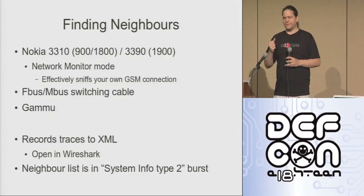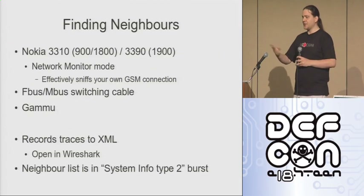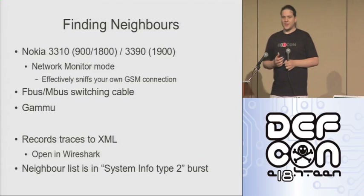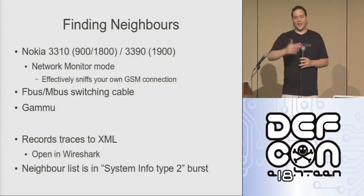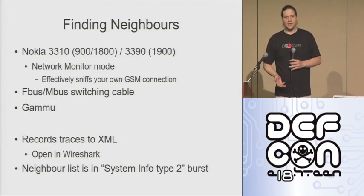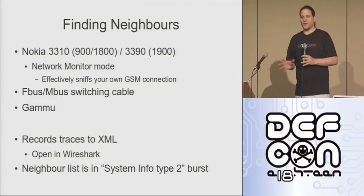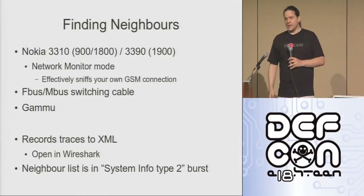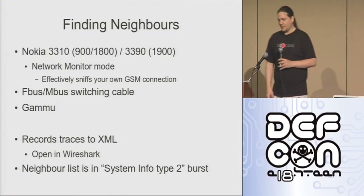You get a Nokia DCT4 phone — the 3310 does the two European bands, the 3390 does at least one of the US bands. What these do is they support a thing called network monitor mode. Network monitor effectively dumps a log of every GSM thing that the cell phone does — every packet it sends to the base station, every burst it receives from the base station, everything. It doesn't allow you to interact with it or control it beyond what you can do on the handset already, but it gives you very detailed insight into what your phone sees on the GSM network.